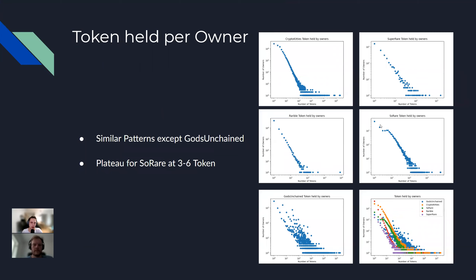The first metric was the tokens held per owner. We looked at how many tokens were held by how many owners. We can see that this metric is rather similar for all of the NFTs. One exception is Gods Unchained, where the ecosystem is rather different, which leads to a rather different result.